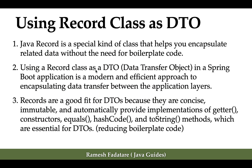Using a record class as a DTO in a Spring Boot application is a modern and efficient approach to encapsulating data transfer between application layers. Record class holds immutable data and is a good candidate as a DTO. Records are a good fit for DTOs because they are concise, immutable, and automatically provide implementations of getter methods, constructors, equals, hashCode, and toString methods, which are essential for DTOs.